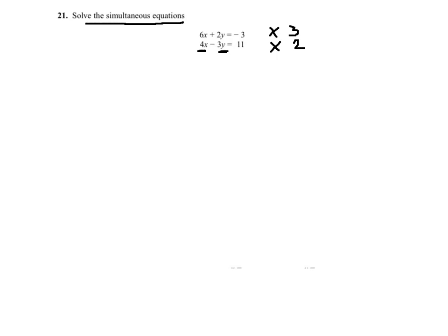And this will give me 3 times 6x, that's 18x, plus 6y equals minus 9. And if I time the second equation by 2, I will get 2 times 4, which is 8x, minus 2 times 3, which is 6y, equals 22.